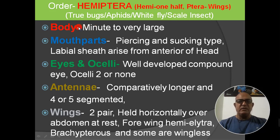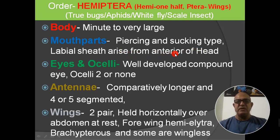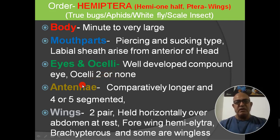The salient features of Order Hemiptera: body is minute to very large. Mouthparts are piercing and sucking type. The labial sheath arises from the anterior part of the head. Eyes and ocelli are well developed; compound eyes are well developed. Ocelli — simple eyes — number two or are absent. Antennae are comparatively longer and four or five segmented.